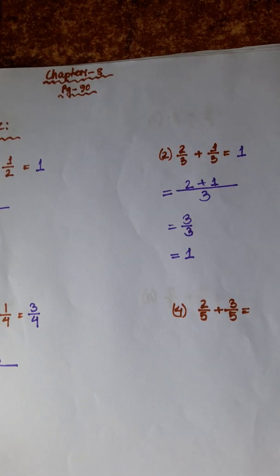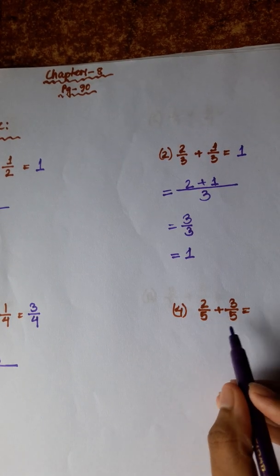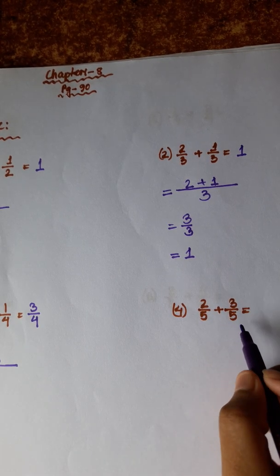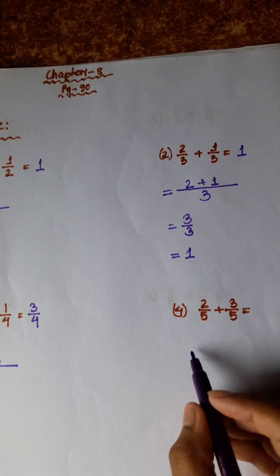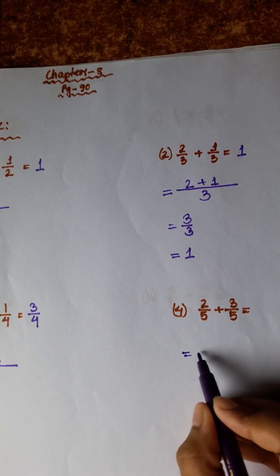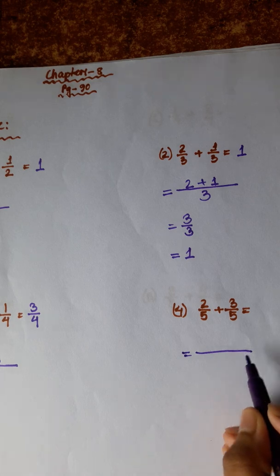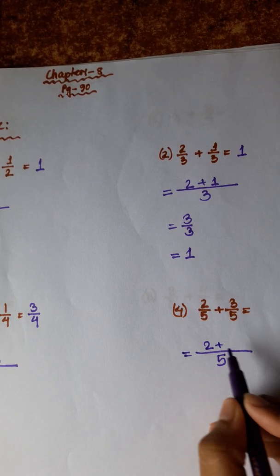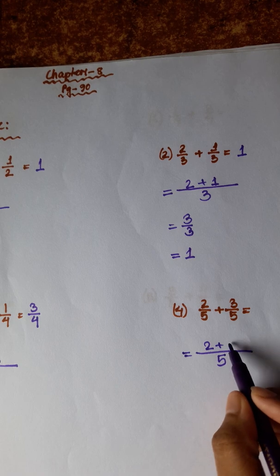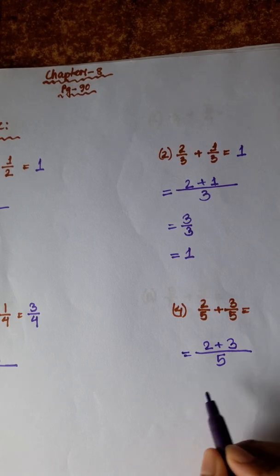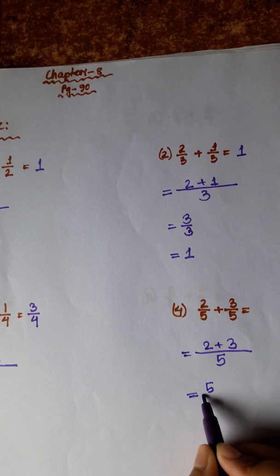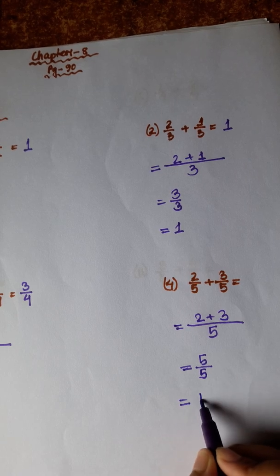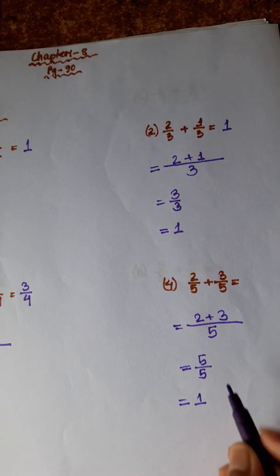Next: 2 by 5 plus 3 by 5. The denominator is the same: 5. Now the numerator: 2 plus 3 equals 5. So 5 by 5.